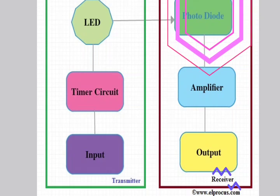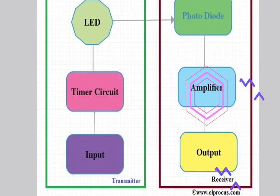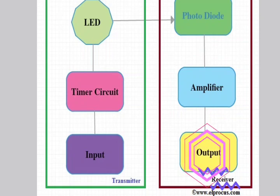The receiver section includes photodiode as well as amplifier. Here photodiode receives the LED bulb flashes then changes the flashes into electrical signals. Finally, the amplifier receives the signal from the photodiode and amplifies it to provide the output.